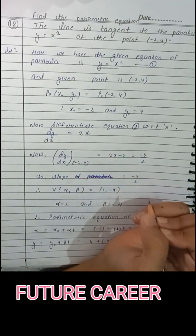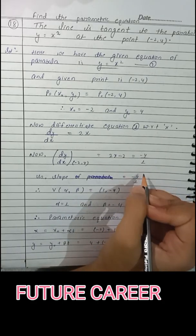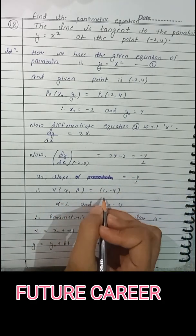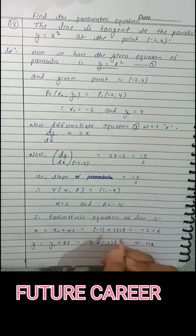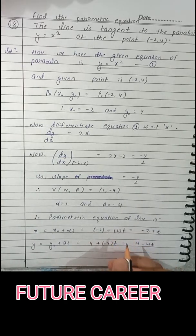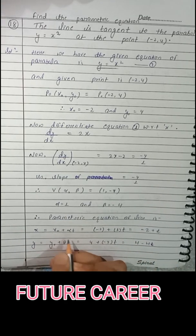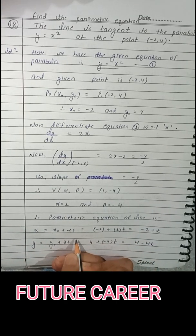So slope equals -4/1, so α equals 1 and β equals -4. So the parametric equation of the line is x equals x₀ plus αt, which is x₀ equals -2 here